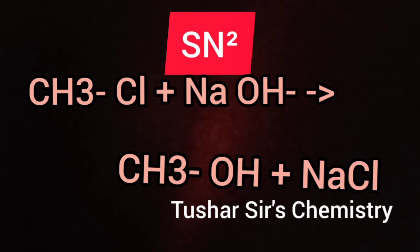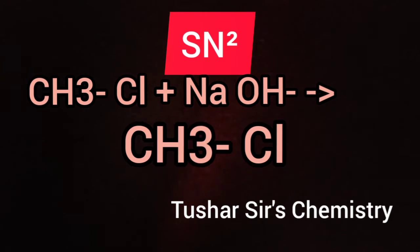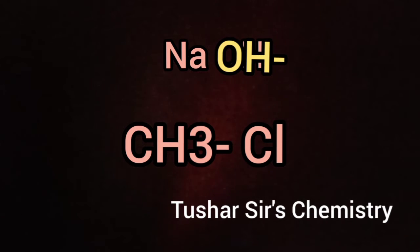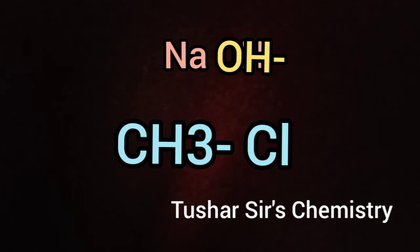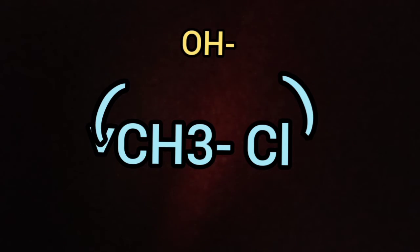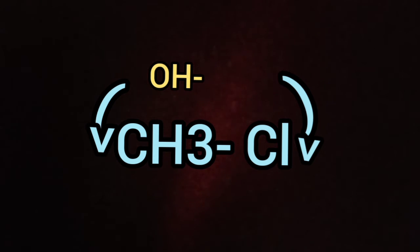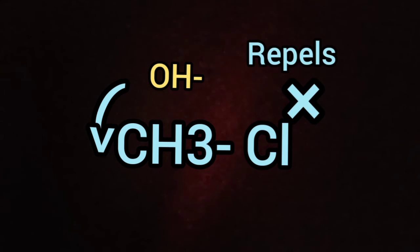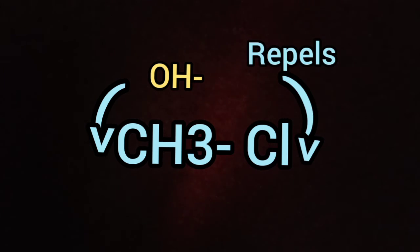When OH minus from aqueous sodium hydroxide attacks methyl chloride, it can attack from two sides: from right side or left side. When it attacks from right side, the chlorine present in between OH minus and carbon of CH3Cl repels because chlorine is electronegative.